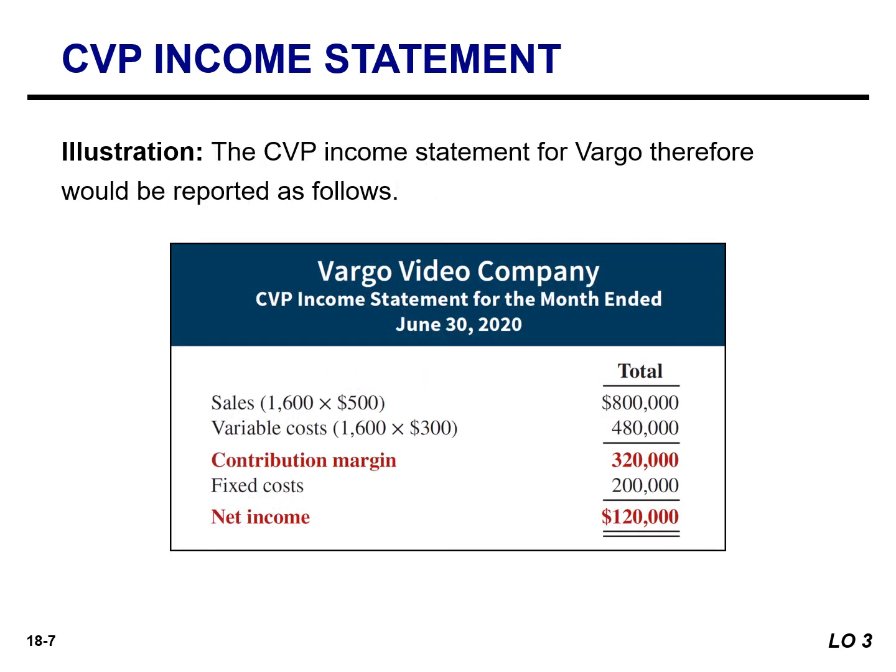A traditional and CVP income statement will report the same amount of net income — in this instance, net income of $120,000, assuming all units produced are sold. However, a traditional income statement does not classify cost as variable or fixed and therefore does not report a contribution margin.